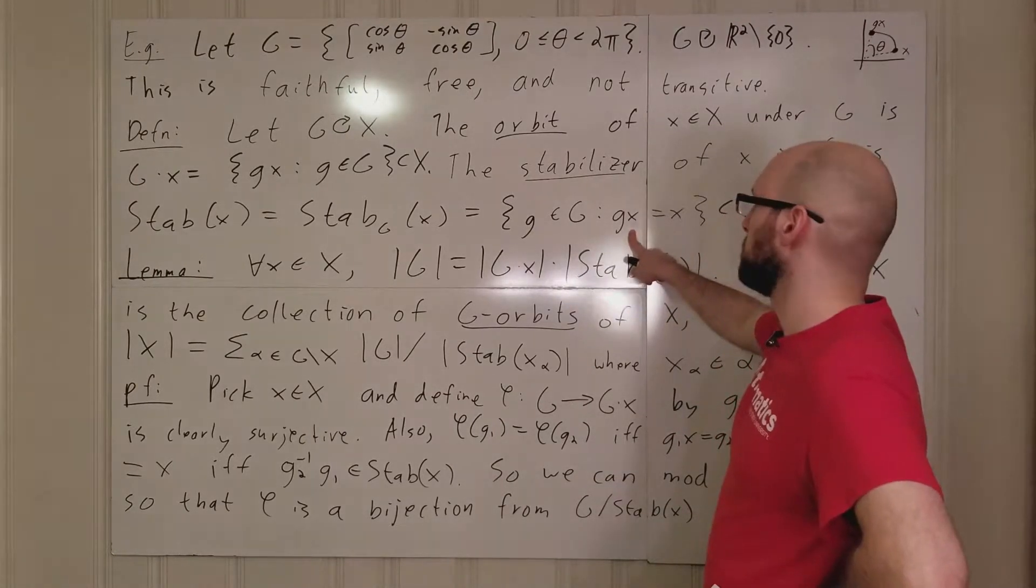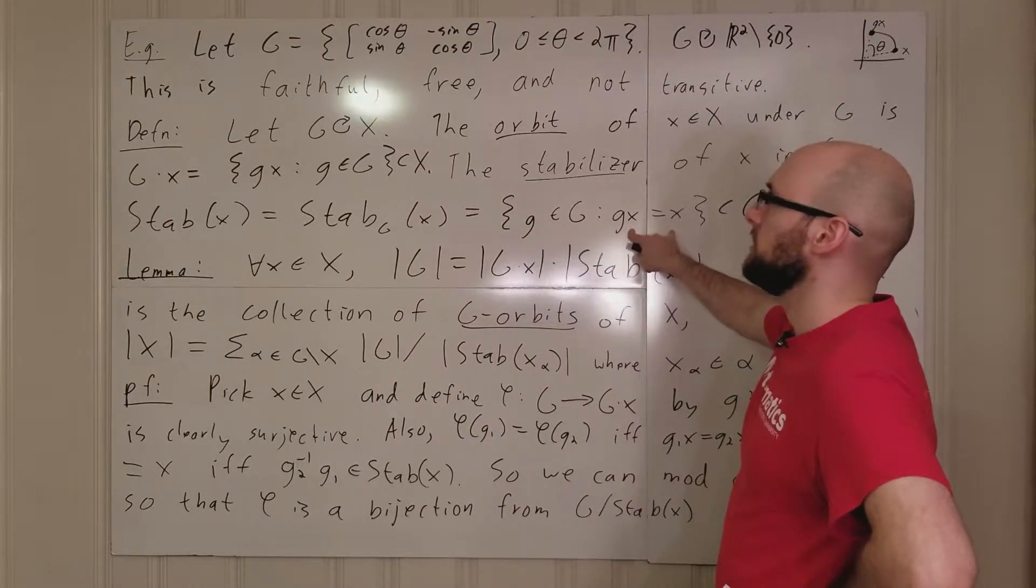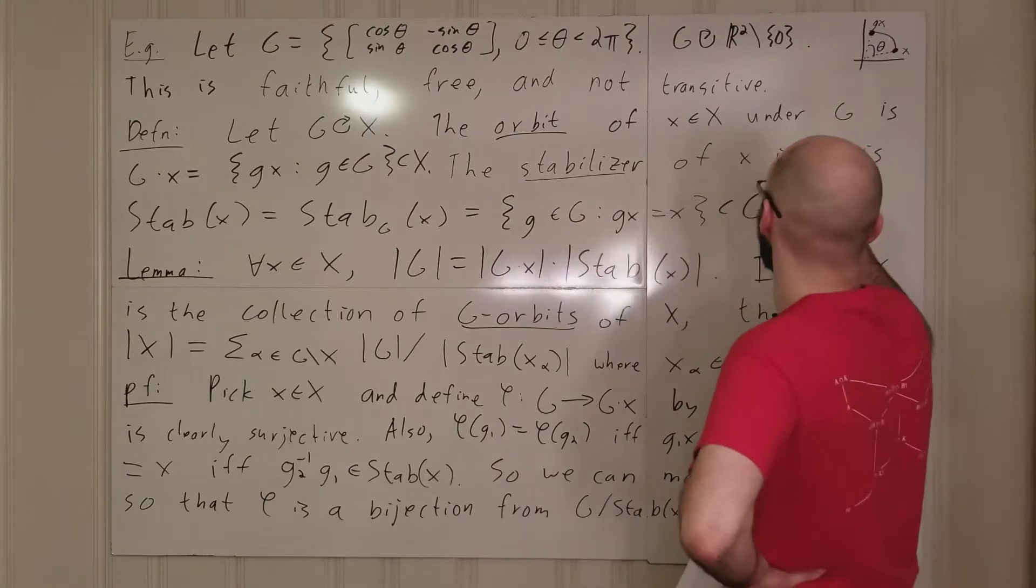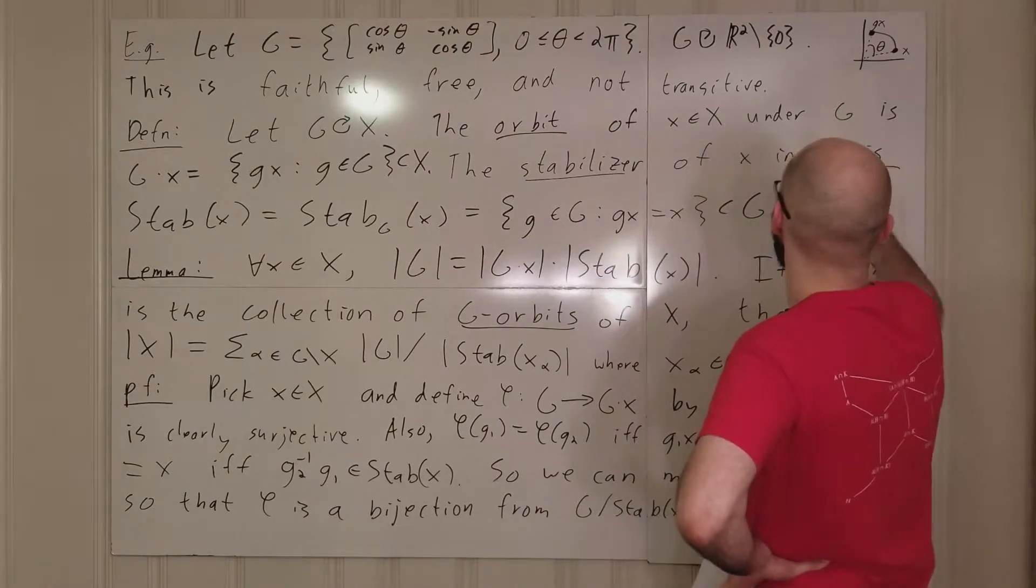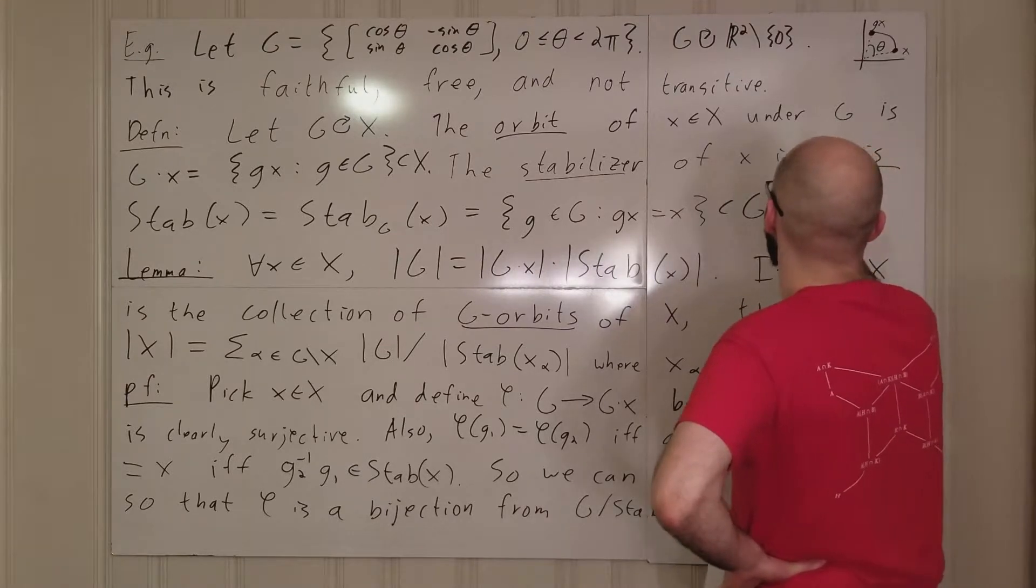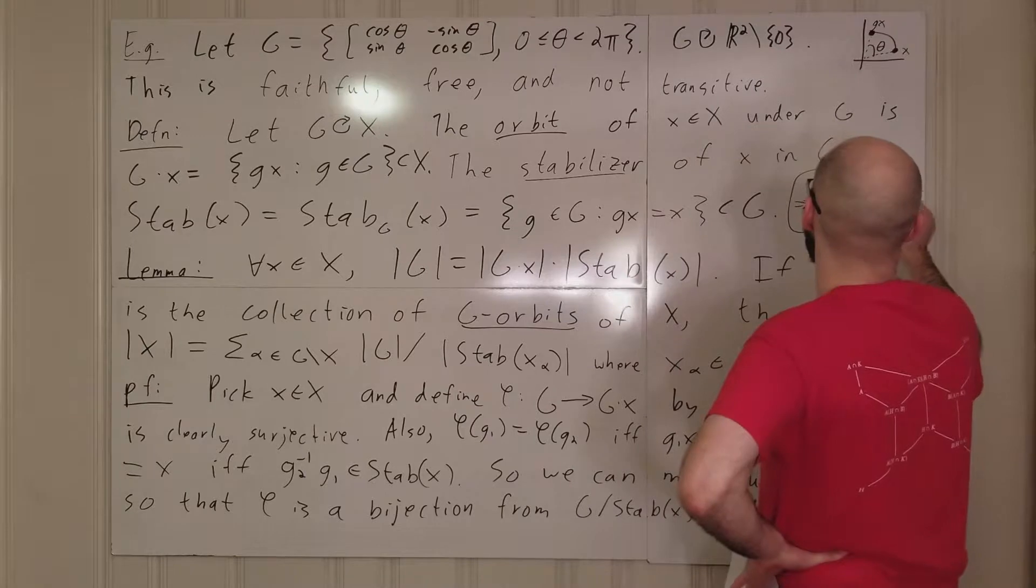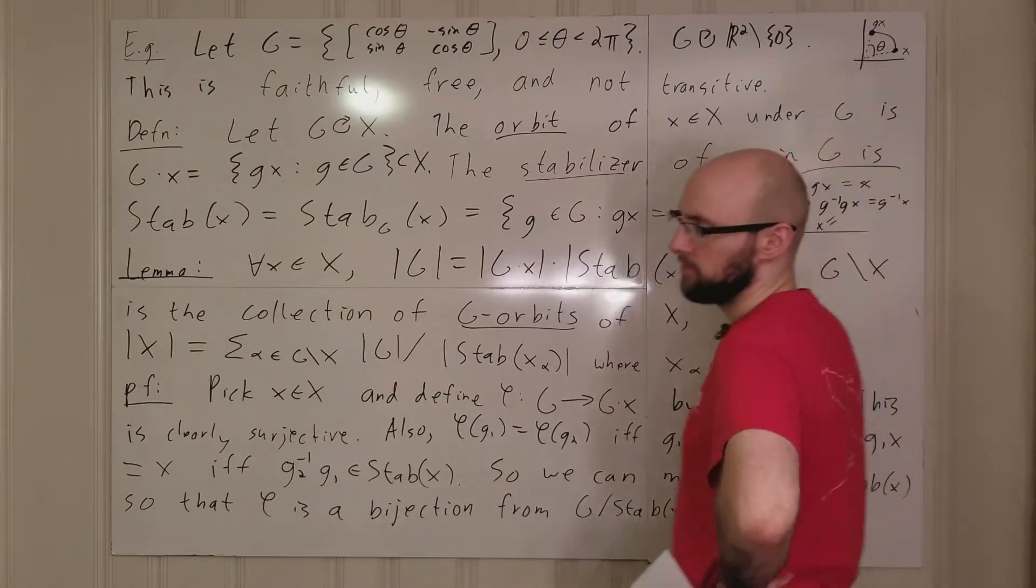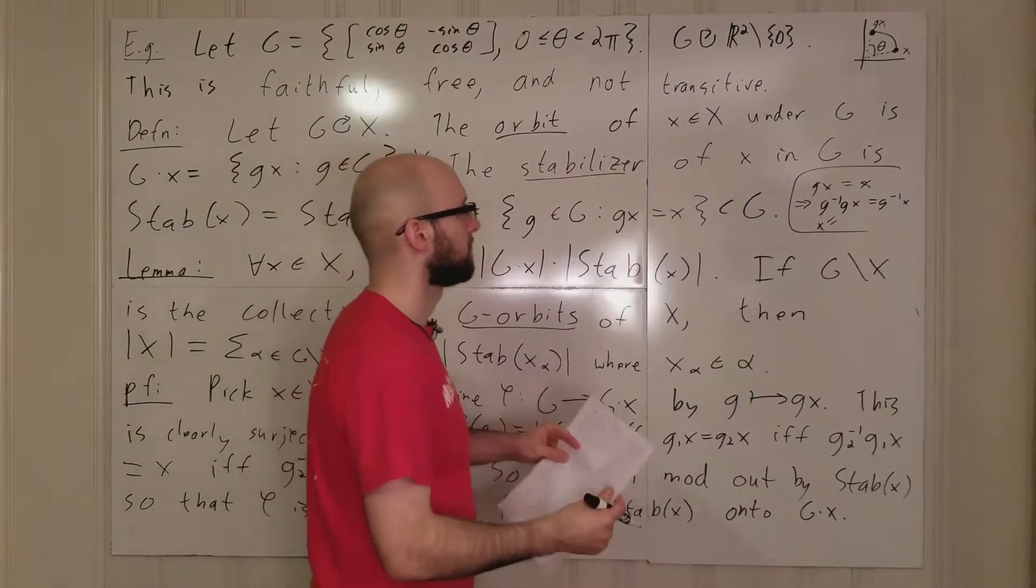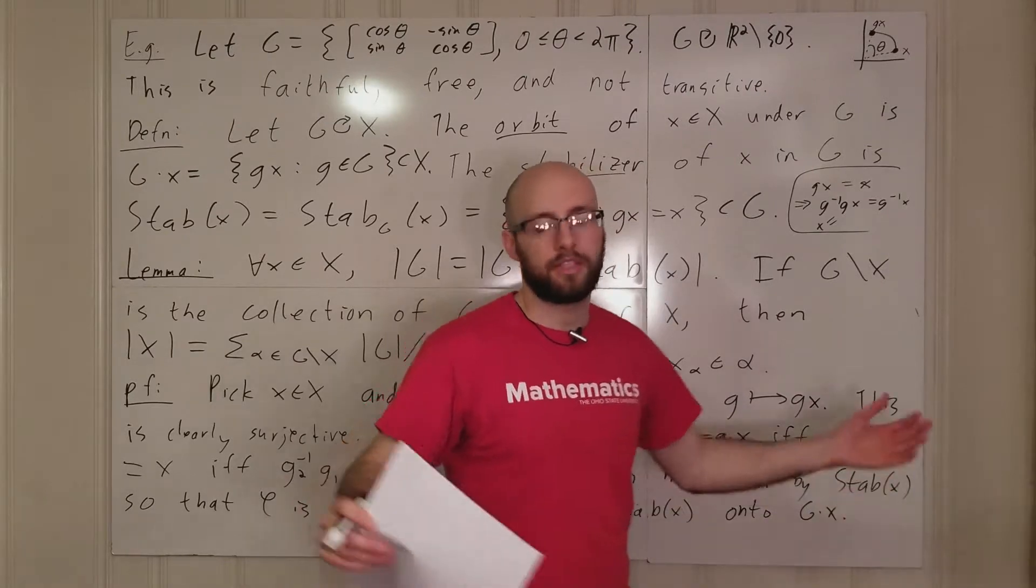Obviously, the identity element is going to stabilize it. If g stabilizes x, if gx equals x, then that means g inverse gx equals g inverse x. But g inverse gx is ex, which is x. And so g inverse also fixes x.